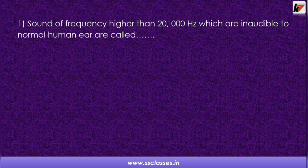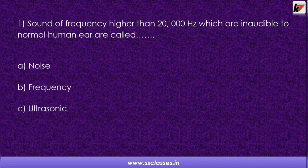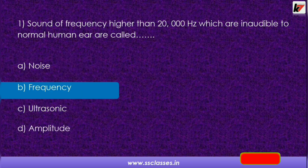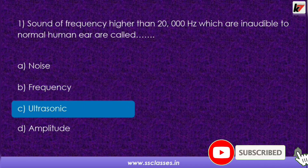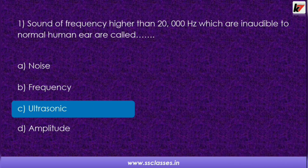Question 1: Sound of frequency higher than 20,000 hertz, which is inaudible to the normal human ear, is called? Options are: noise, frequency, ultrasonic, or amplitude. This type of frequency is known as ultrasonic. There are two types of sound frequencies — ultrasonic and infrasonic. We will see infrasonic later on.